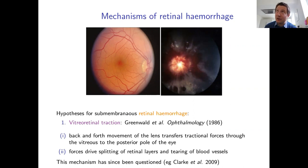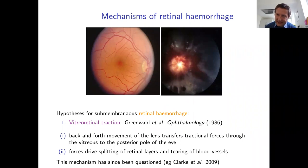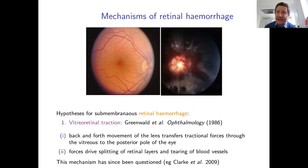The vitreo-retinal traction mechanism was widely accepted among clinicians after 1986 but has more recently been questioned. Several eminent ophthalmologists and pathologists now doubt this mechanism. A notable paper by Clark et al. in 2009 in the journal Eye describes a number of clinical cases that do not fit the vitreo-retinal traction hypothesis, and the mechanism is now considered discrepant with the clinical evidence.